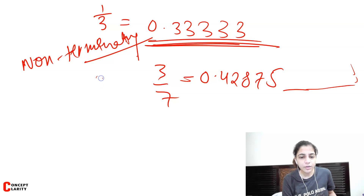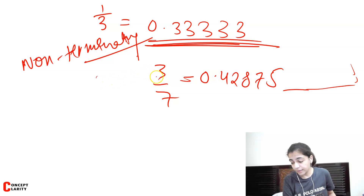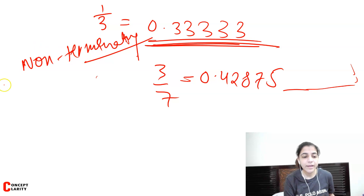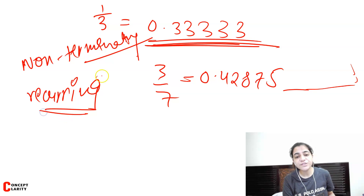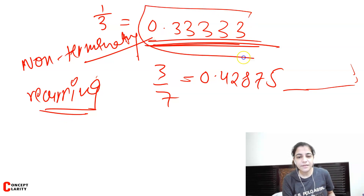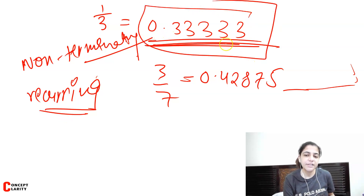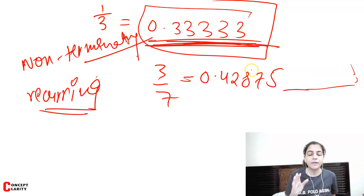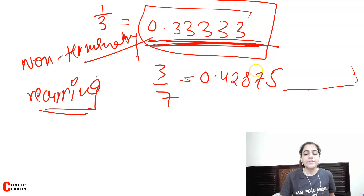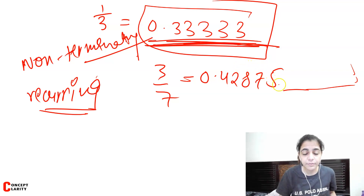Now let's talk about non-terminating numbers further. Among non-terminating numbers, if the same digit repeats — like 1 by 3 giving 0.3333... where 3 keeps repeating — it is called a recurring number. It recurs again and again, so it is called a recurring number.